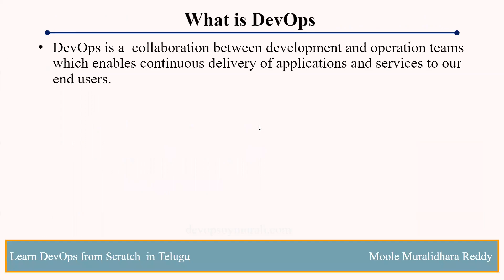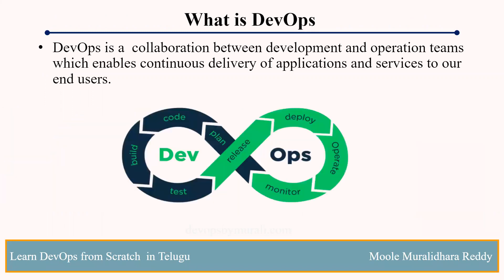What is DevOps? DevOps is a collaboration between the developer team and the operations team. Here is a developer operation team. The developer writes and tests the code locally, while the operation team handles the application deployment and maintenance. There is a gap between the developer team and the operations team — that is where DevOps comes in.